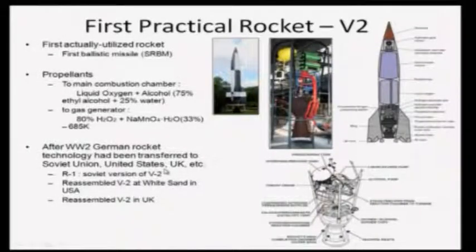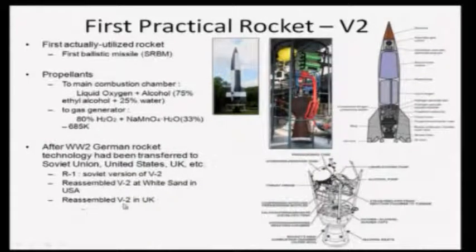After the Second World War, German rocket technology was transferred to various allied countries like the Soviet Union, the United States, and the UK. The R-1 was the Soviet version of the V-2 rocket; the USA reassembled V-2 rockets at White Sands, and the UK also reassembled V-2 rockets. The technology has not much changed since — it still uses almost the same schematic with all the main components already present in the V-2. Only component efficiencies have increased; the basic schematic remains the same.